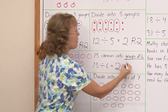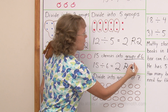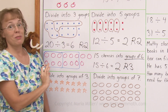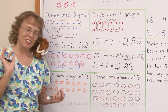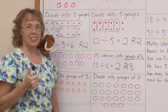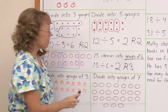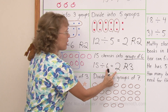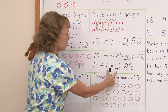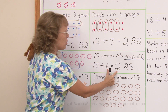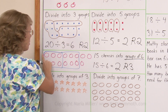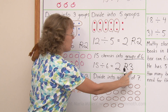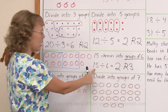But the remainder is still those leftovers — those three cherries. And once again we can check this division by multiplying these two numbers: six times two, to get how many are in the groups, and then add the leftovers — three — to get the total number.